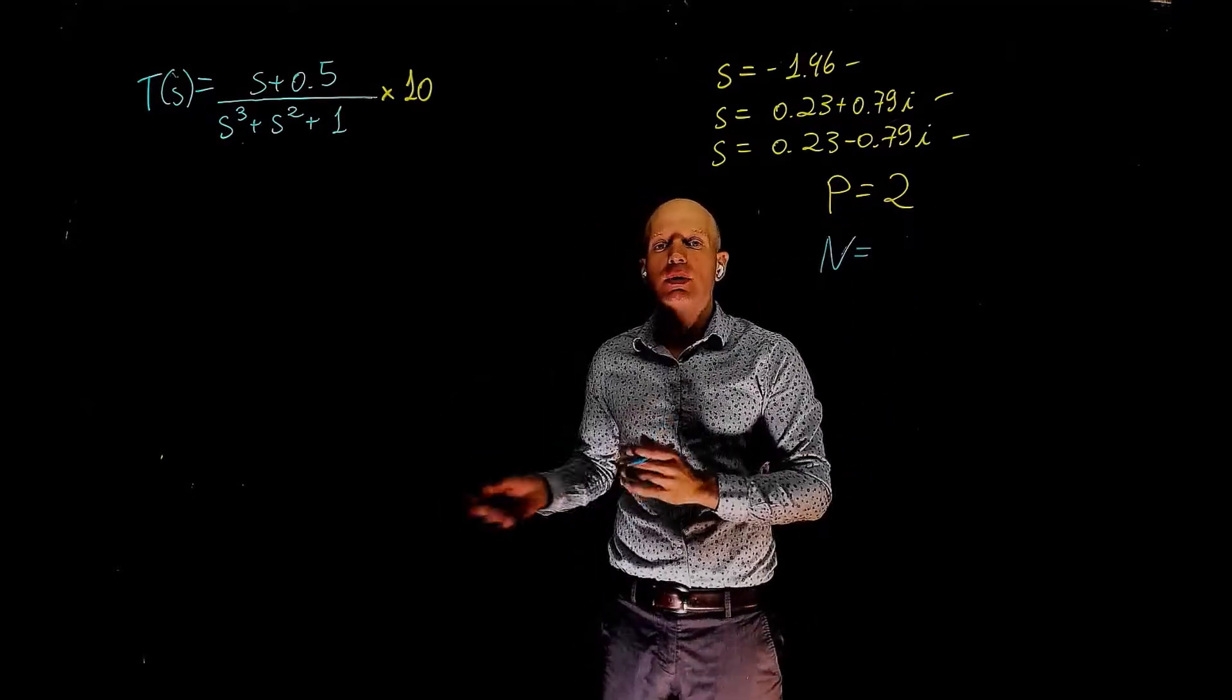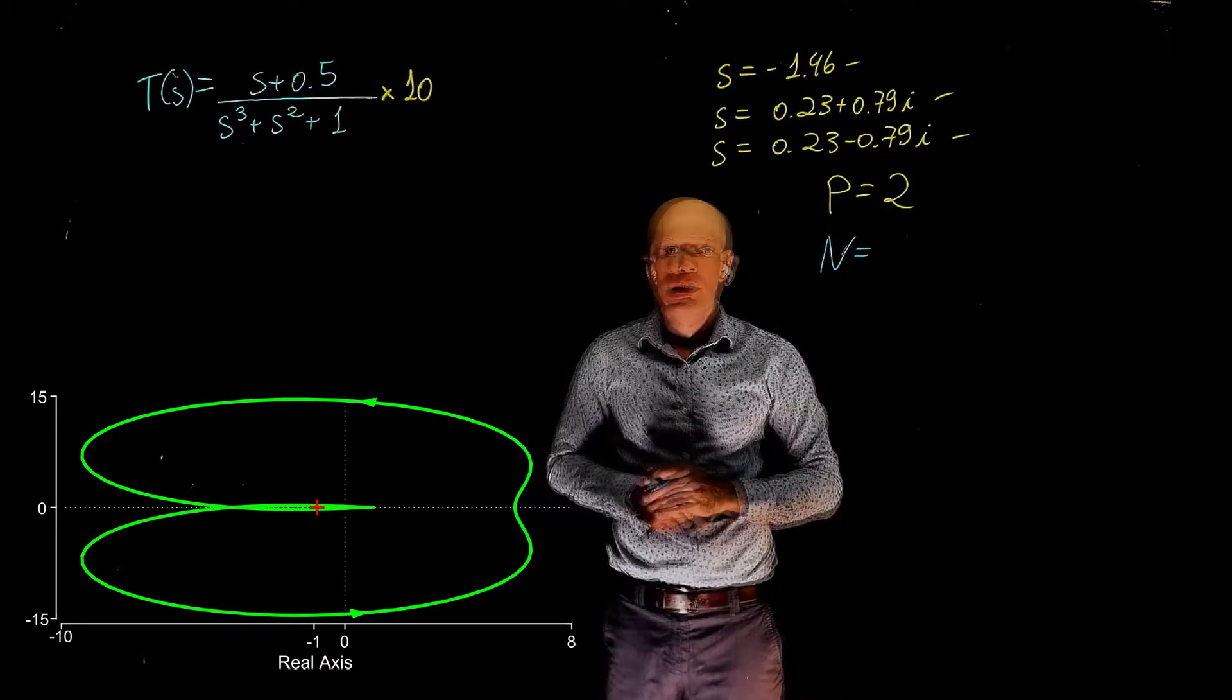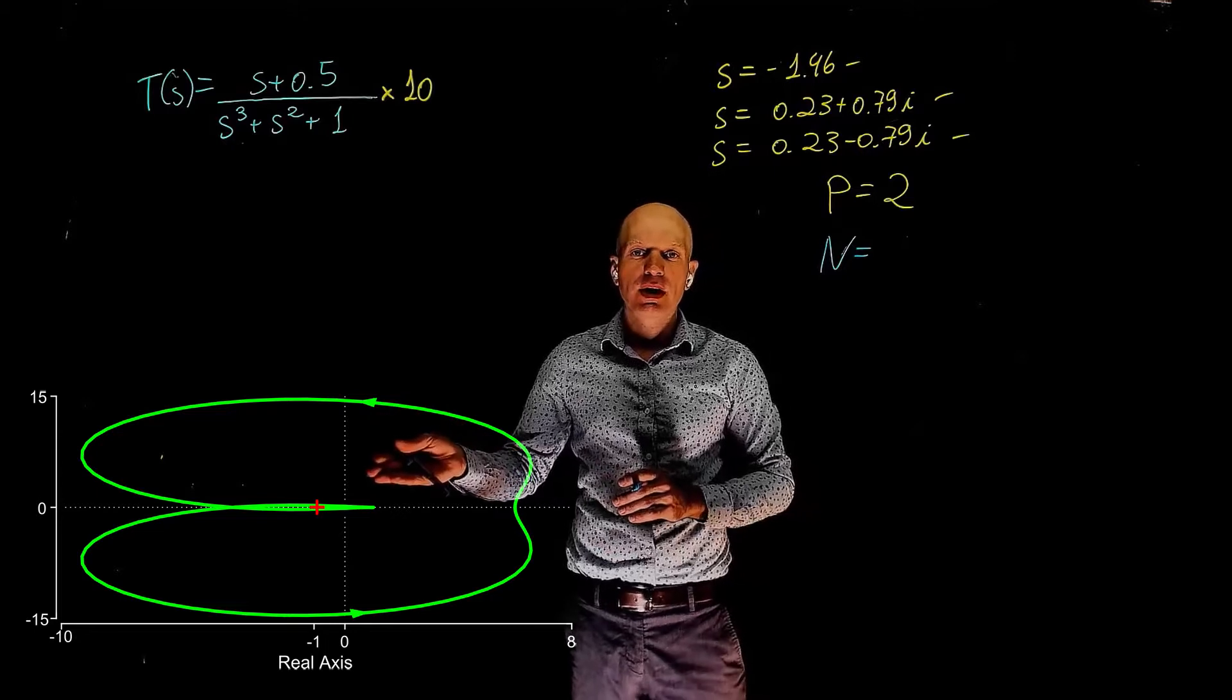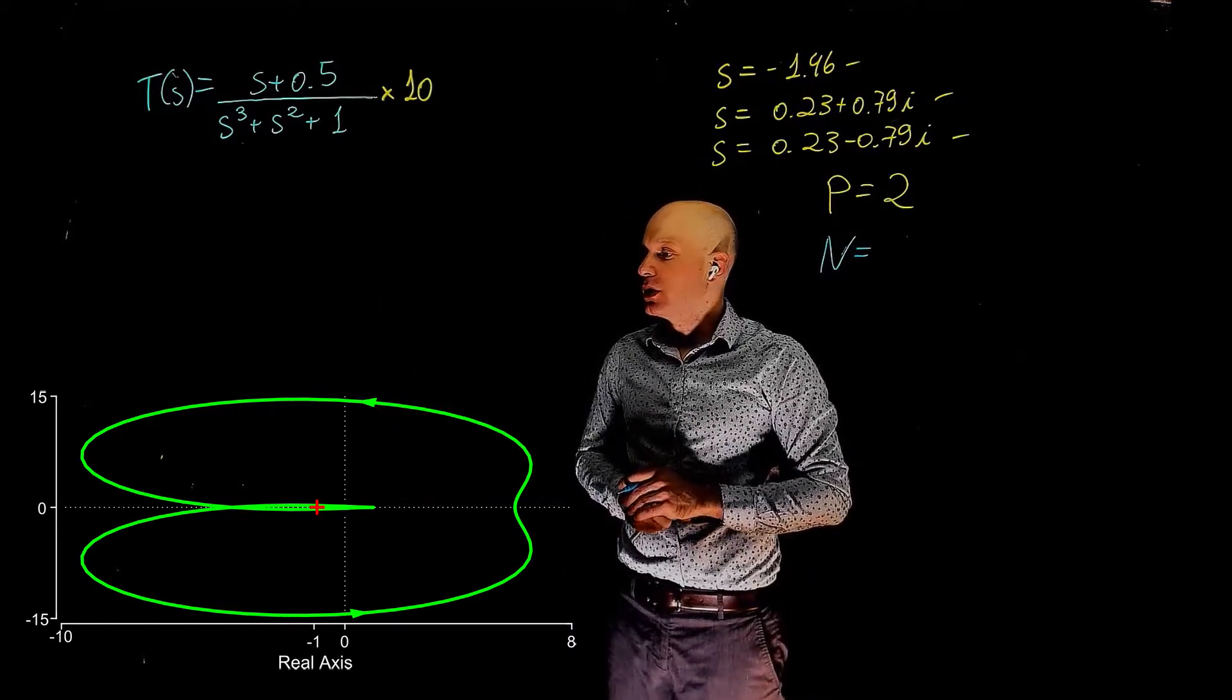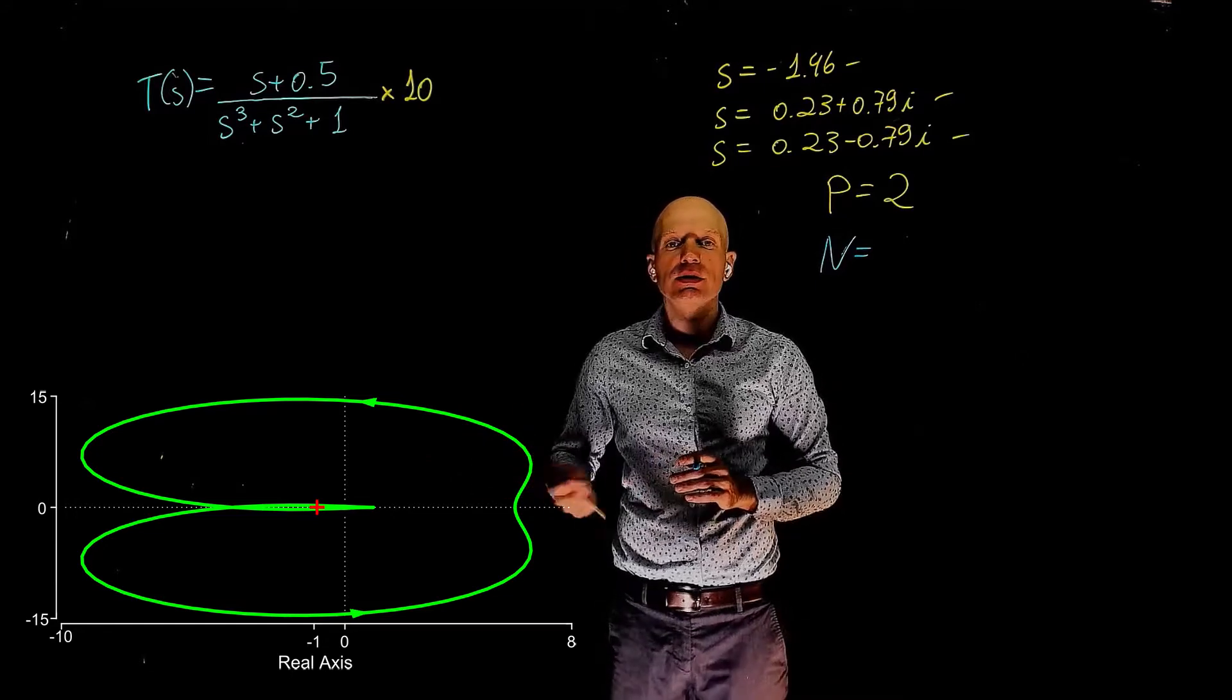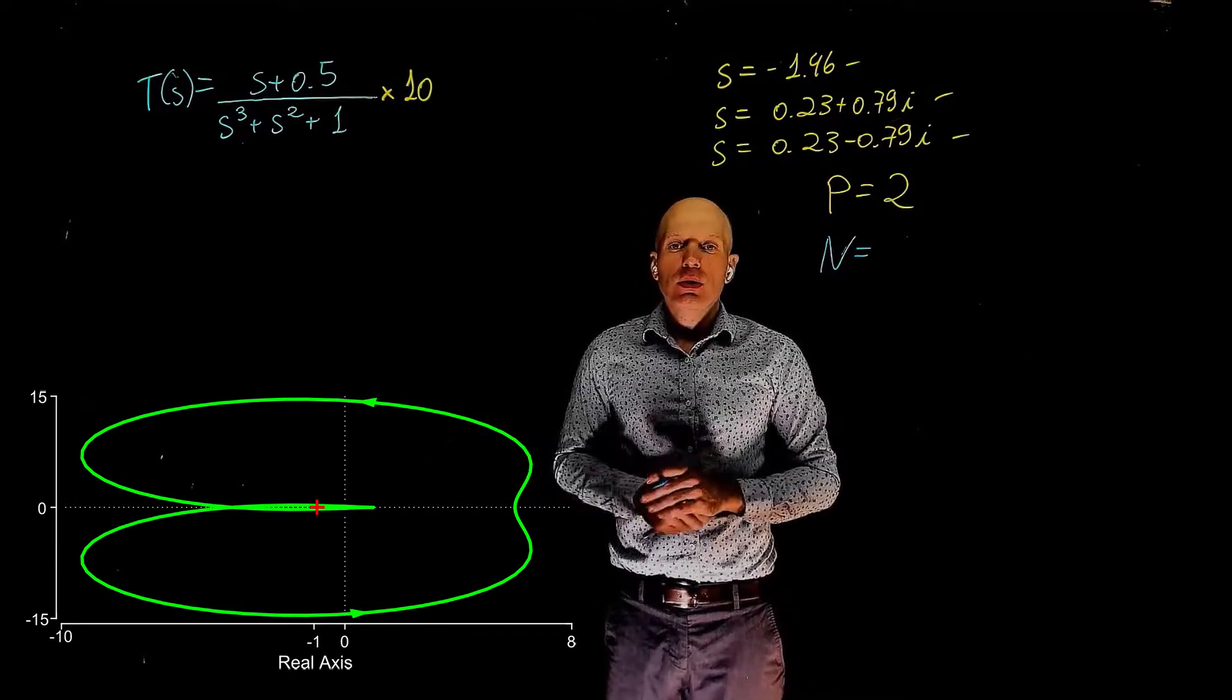Now, what happens to the Nyquist plot? We need to count the number of encirclements of negative 1. If you trace a line starting at negative 1, pointing towards infinity in any direction, you see that the Nyquist plot intersects this line two times, and does so in the counterclockwise direction.